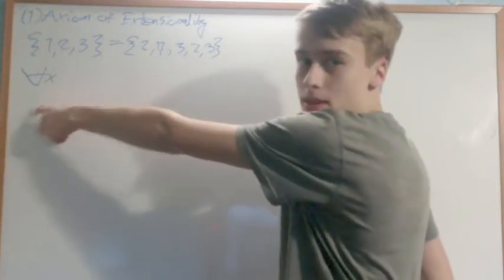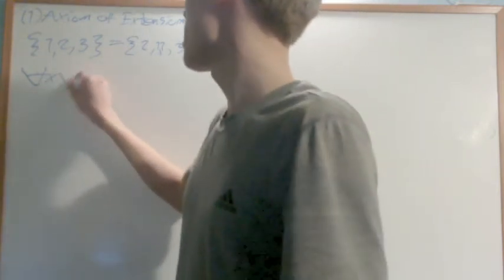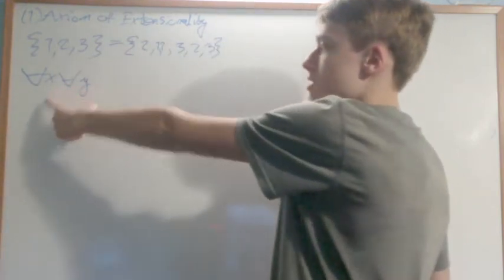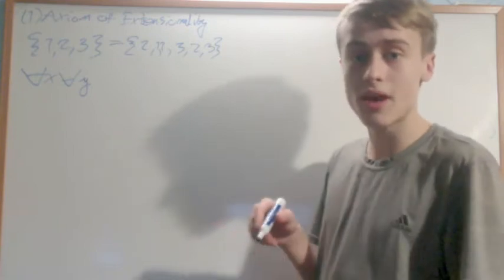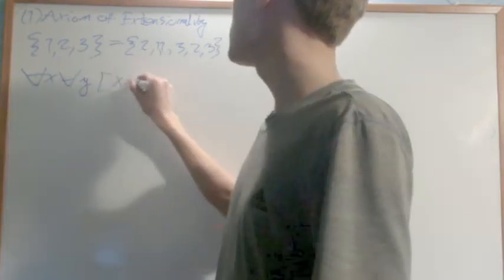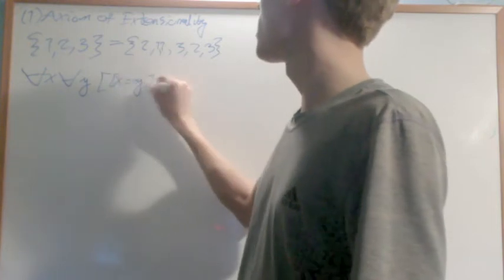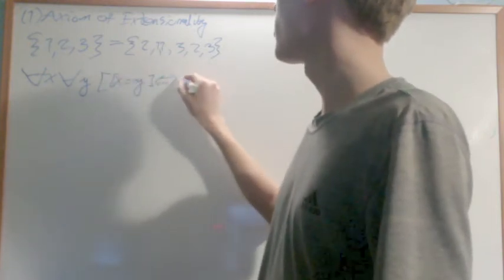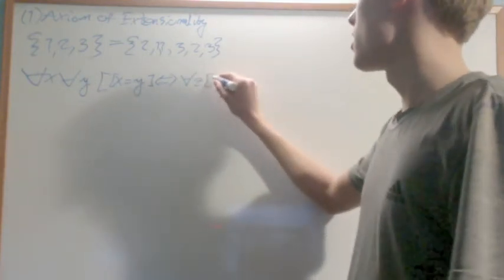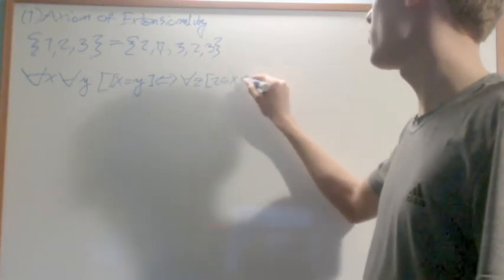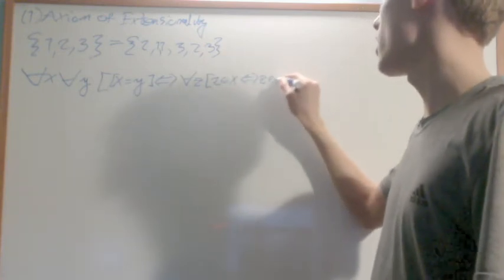How you say this formally is that for any set x — that's what this upside-down A means, for any x — and for any y, it's assumed that these are sets. Any object in axiomatic set theory is a set. X is equal to y if and only if, for any set z, z is an element of x is equivalent to saying z is an element of y.